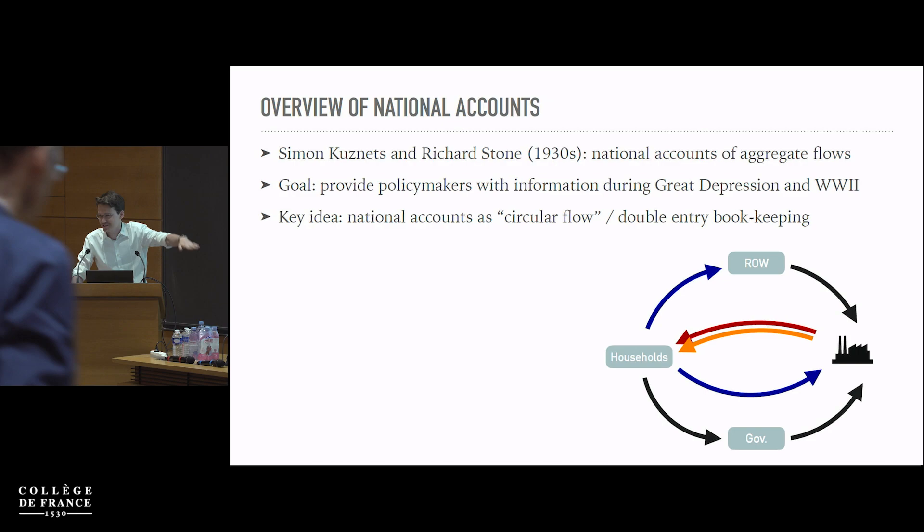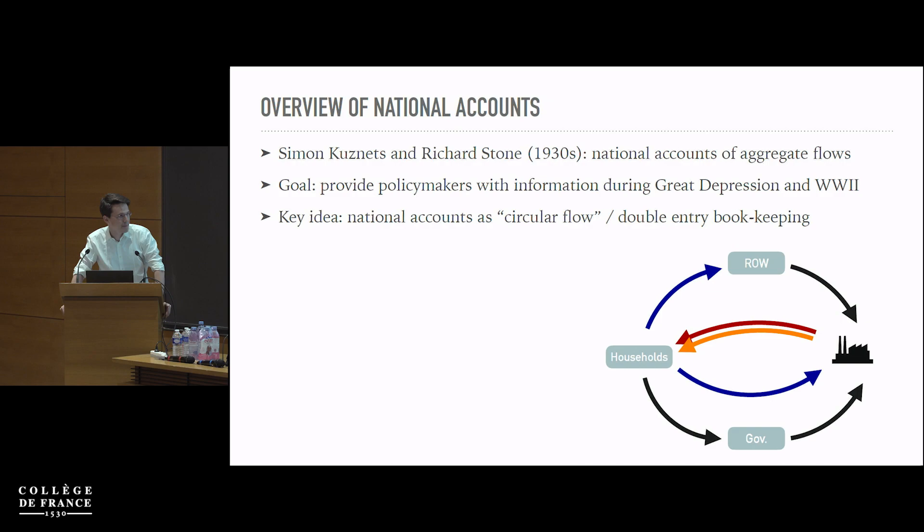Richard Stone was actually working at the British Treasury with Keynes at the time to measure these accounts. One key idea in the national accounts is double-entry bookkeeping, meaning that the income that shows up as received on the household account is also the income that shows up as paid on the production account. Once you have that satisfied, you can draw the circular flow diagram you've seen in undergrad textbooks — households that earn income in terms of profits and labor, and spend on businesses or abroad.